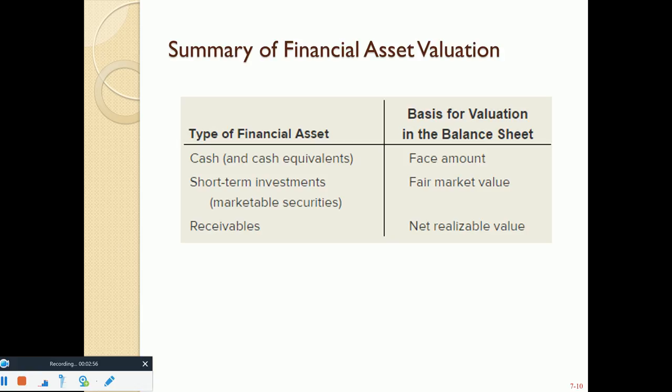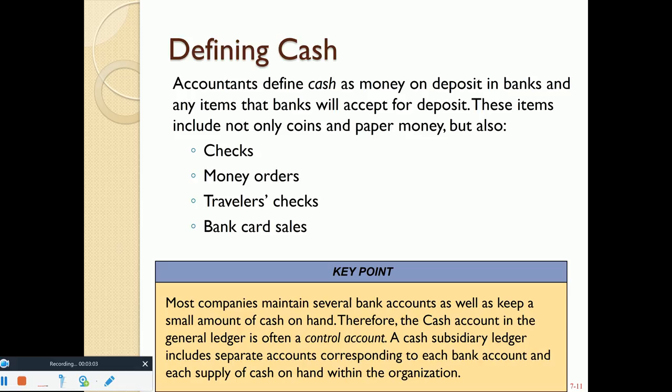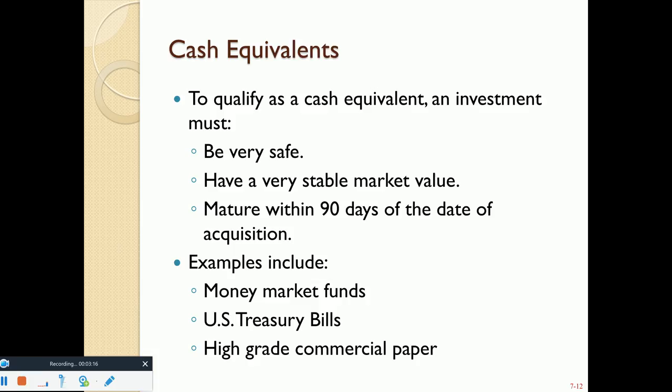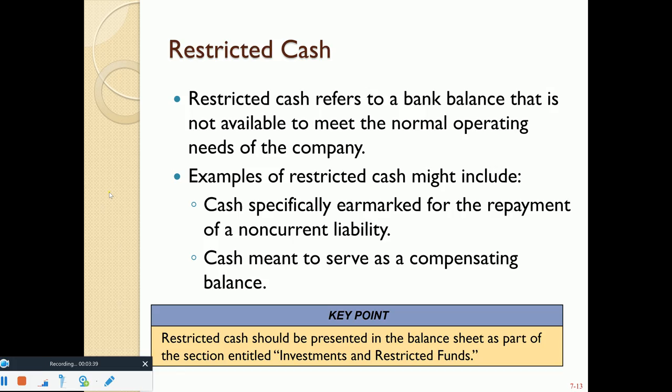Cash represents physical cash, money orders, checks, traveler's checks, bank card sales—basically anything on deposit. A cash equivalent is reported on the same balance sheet line as cash. It has a very stable market value and usually matures within 90 days of acquisition. Examples include T-bills, money market funds, or a short-term certificate of deposit.